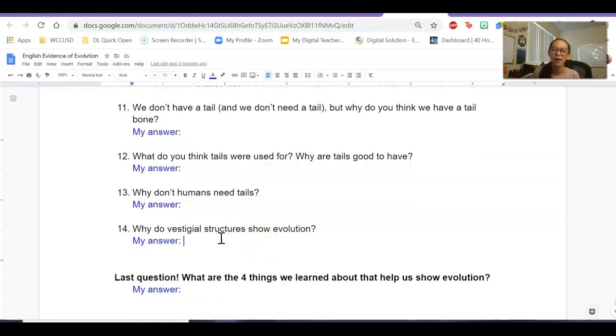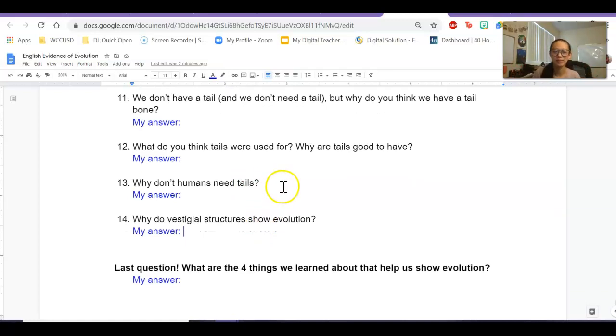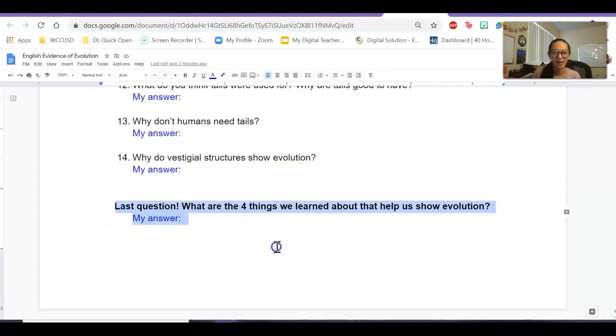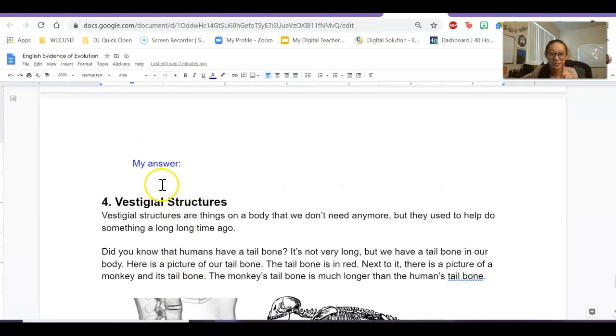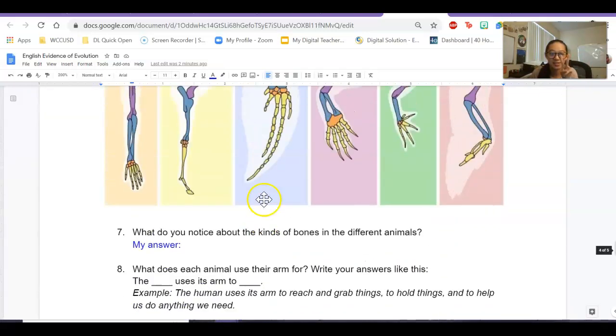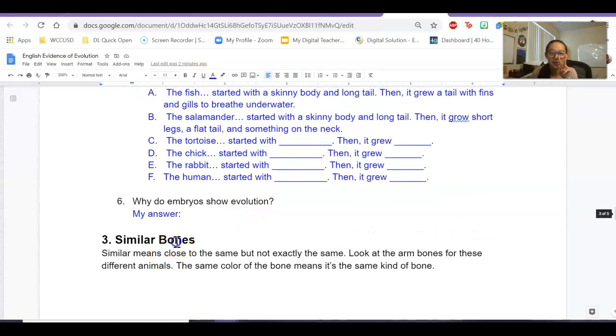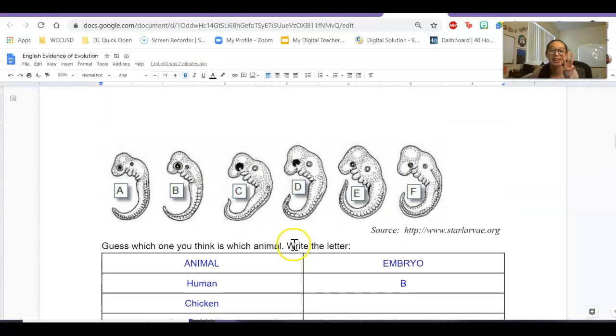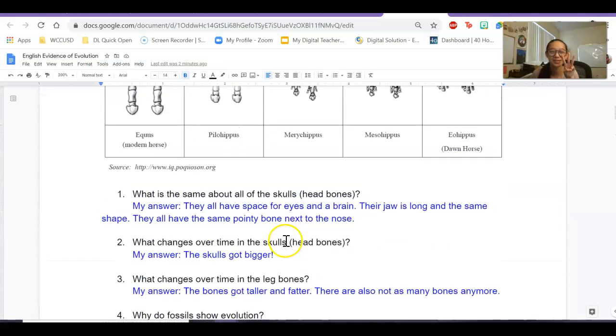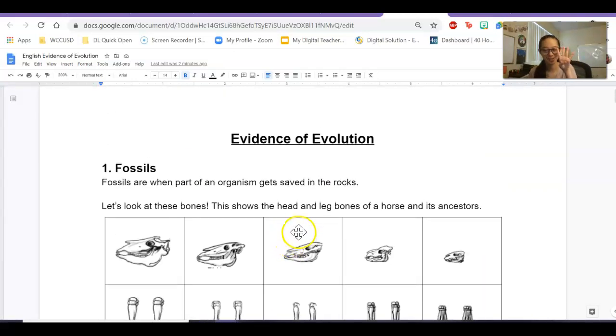And then last, why do vestigial structures show evolution? So why do these things show evolution? Why are they evidence for evolution? And then finally, here's the last question. What are the four things we learned about? Hint, there's the four parts. Vestigial structures, similar bones, embryos, and fossils. Those are the four.